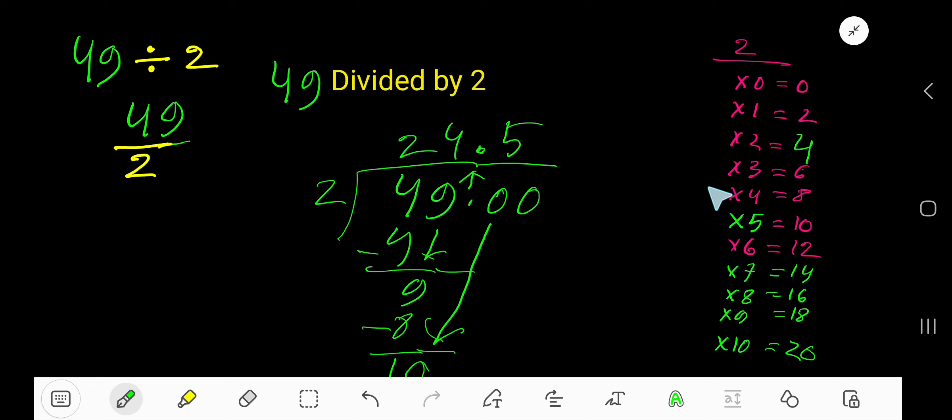To find the multiplication table of 2, just add 2 with the previous step. 0 plus 2 is 2, 2 plus 2 is 4, 4 plus 2 is 6, 6 plus 2 is 8, 8 plus 2 is 10. That's right.